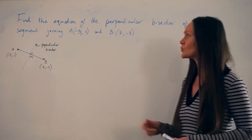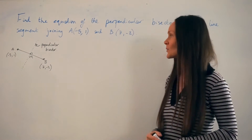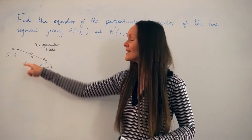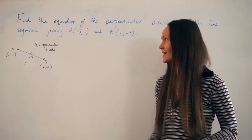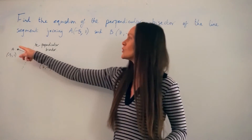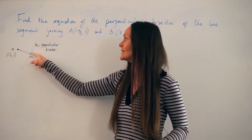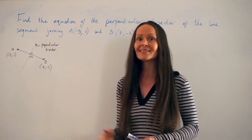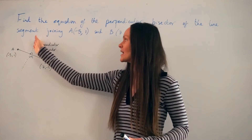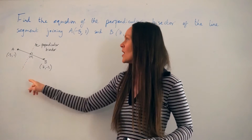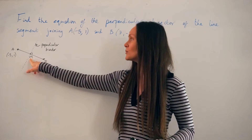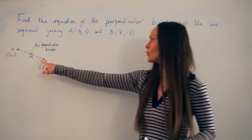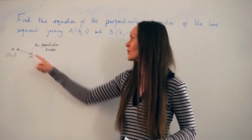Over here, I've just drawn a rough sketch to help us visualize what's happening in this question. Here is the line segment AB, and this dashed line here is what we call the perpendicular bisector. It's perpendicular because the two lines make an angle of 90 degrees with each other, and it's a bisector because this dashed line bisects the line AB — it cuts the line AB exactly in half. This point of intersection I've labeled as N because this is the midpoint of the line AB; this point is exactly halfway along the line AB.